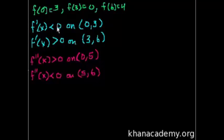So what does all this information tell us? Let's just graph it. f(0) is 3, so we have to graph the points (0, 3), (3, 0), and (6, 4). It seems like all of the action is in the first quadrant, so I'll graph it accordingly.